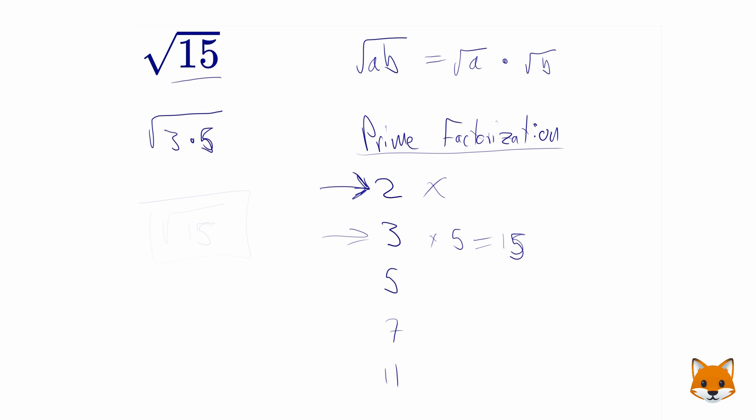Well, 3 and 5 are both primes. So there's nothing we can do to simplify this anymore. What we were looking for were a pair. So for example, if instead of 3 times 5, there were another 3 in here, 3 times 3 times 5, then we would be able to pull out the 3 from under the square root sign.